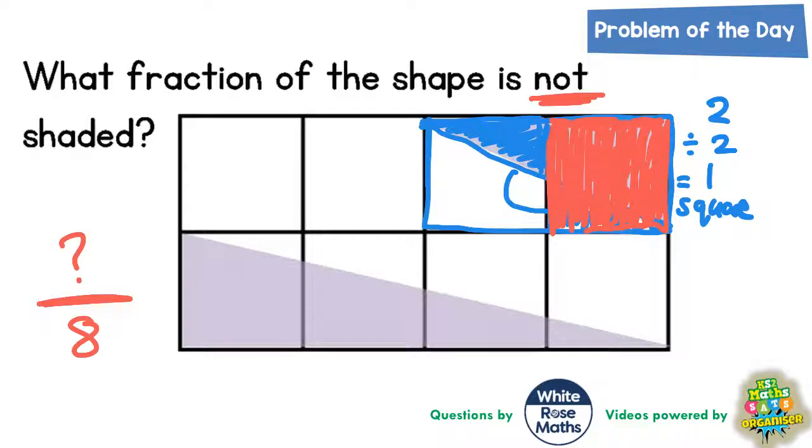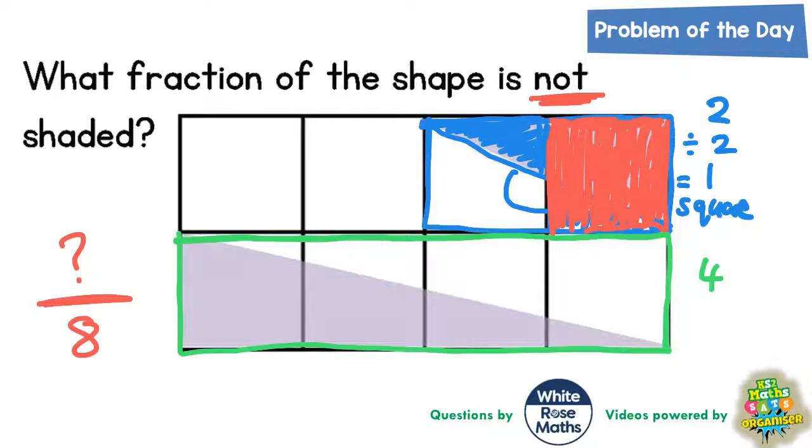Now we can do a similar thing with these four squares. If you draw a rectangle around those four squares, the area of that rectangle would be four squares. But we are splitting it in half diagonally, and if you split four in half, dividing four by two, you get two squares. So the area of the grey triangle is two squares.